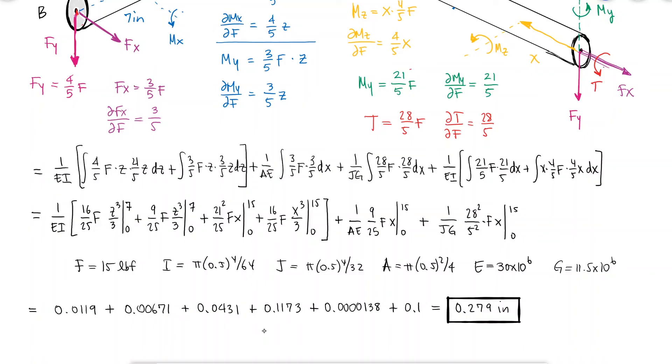If we wanted the overall deflection of B, we would do this same process three times, albeit much shorter, with only Fx, then only Fy, and then only a fictitious force Fz equal to 0. That process would yield a deflection in the x, y, and z directions, which would be the components of the total deflection of B.